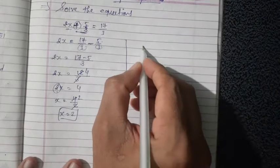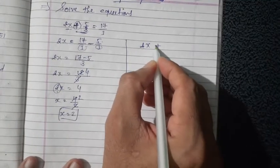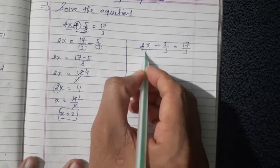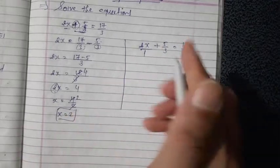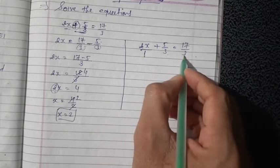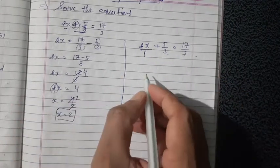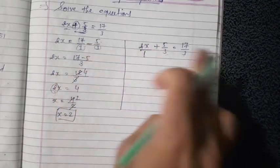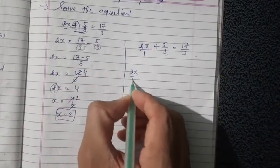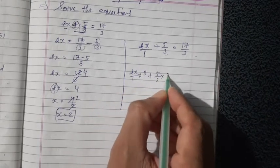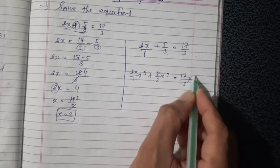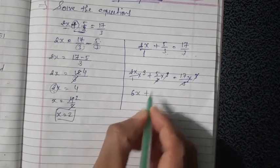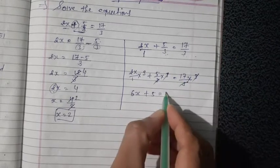And one more method. Look: 2x plus 5 upon 3 equal to 17 upon 3. Here 2x means 2x upon 1. Now take LCM of all denominators: 1, 3, 3 — LCM is 3. Multiply all terms with 3. So that is 2x upon 1 into 3, plus 5 upon 3 into 3, equal to 17 upon 3 into 3. Here 3 and 3 cancel, 3 and 3 cancel, and multiply 3 by 2x — giving 6x plus 5 equal to 17.